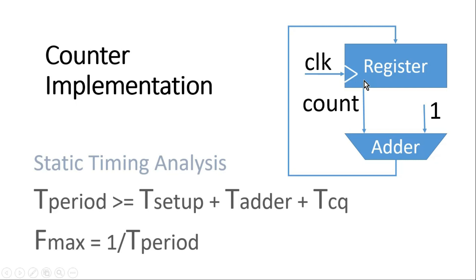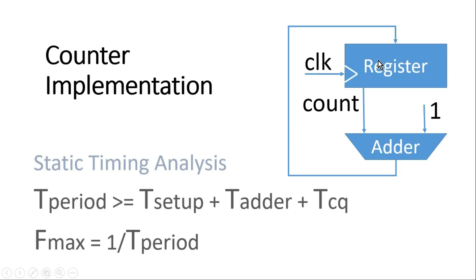Looking at the static timing analysis of this design: the minimum time period of operation will always be greater than or equal to T_setup of this register, plus delay of this adder, plus T_cq delay of this register. F_max equals 1 divided by time period. For example, implementing a 4-bit counter requires a 4-bit adder. If we then implement an 8-bit counter, we need an 8-bit adder, and the delay of this 8-bit adder will always be higher than the delay of the 4-bit adder.